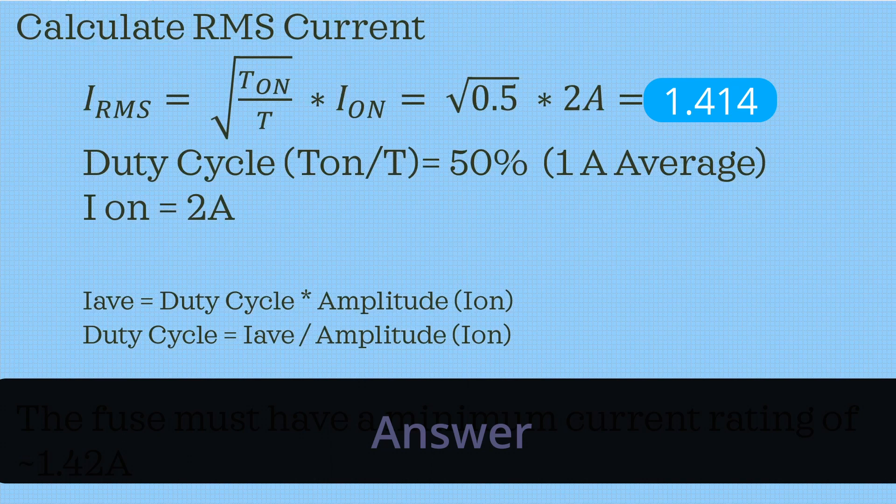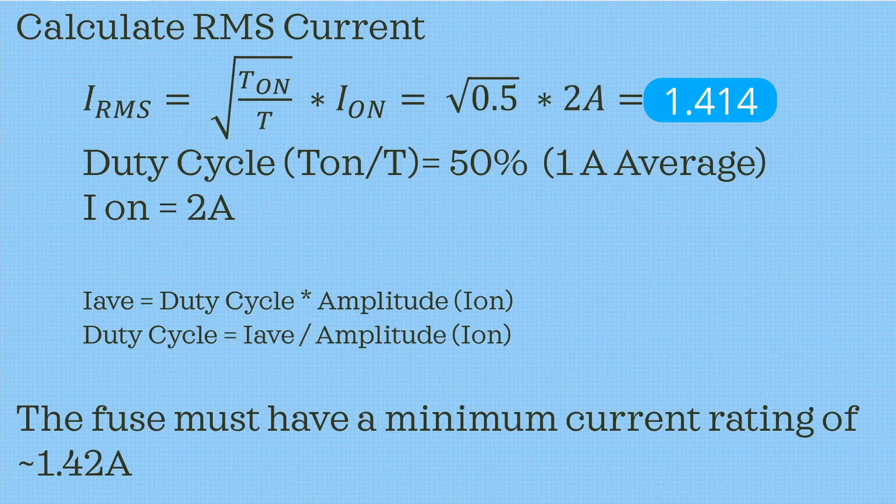If you plug those numbers in, we get square root of 0.5 multiplied by 2A, which is equal to 1.414. Now, to answer the question, we need a minimum fuse rating of 1.42A approximately.